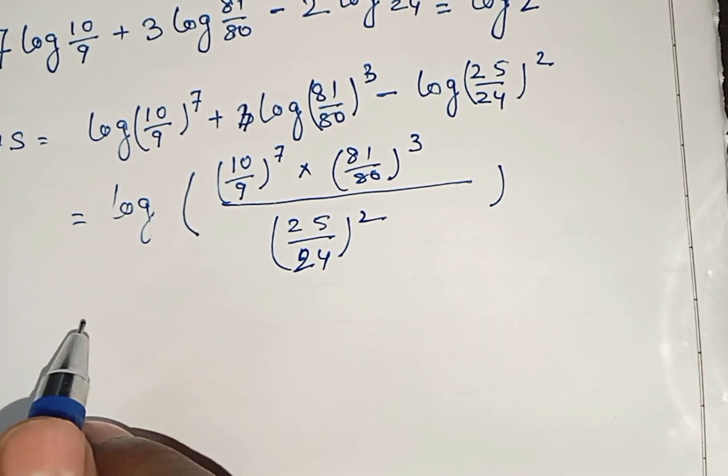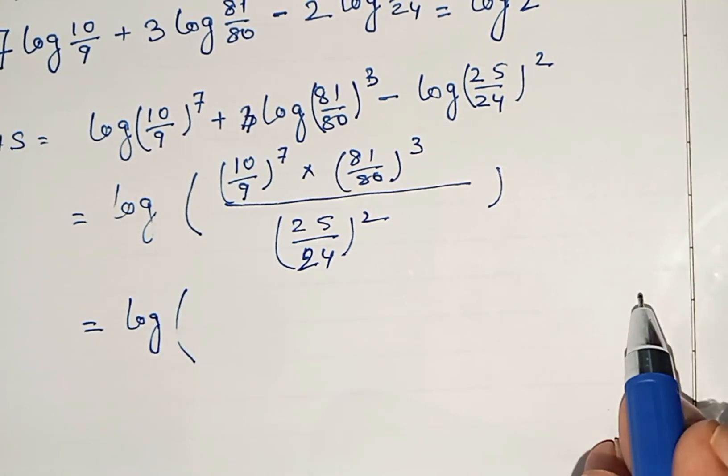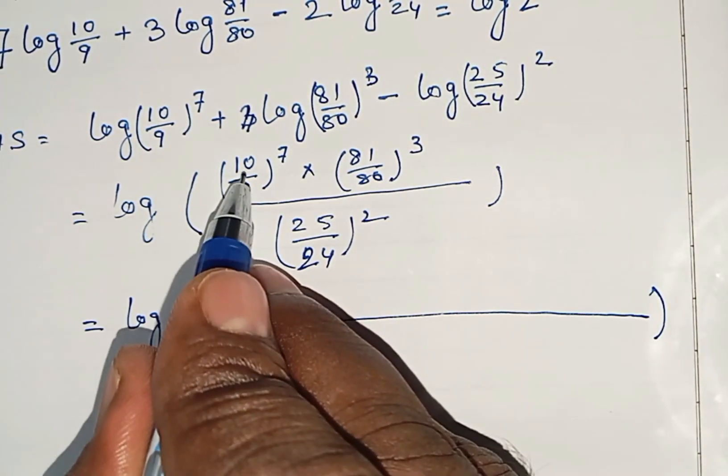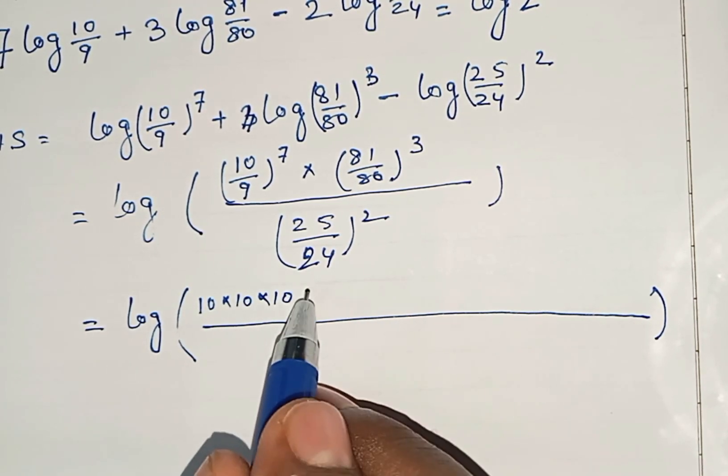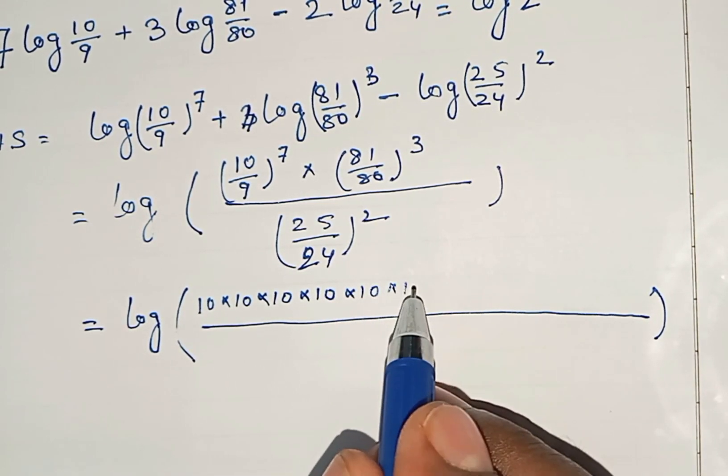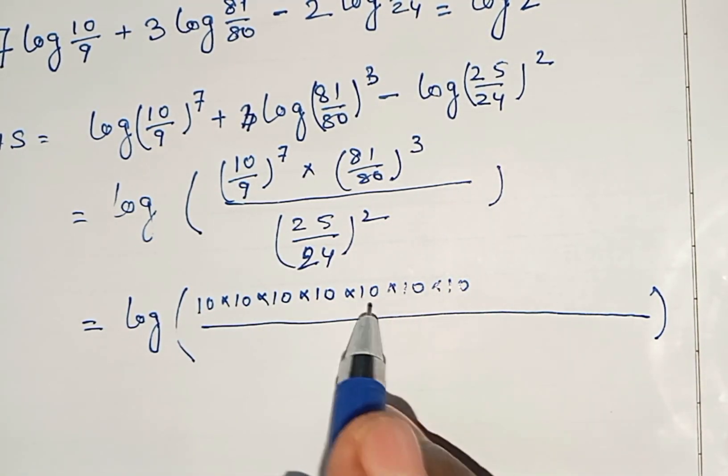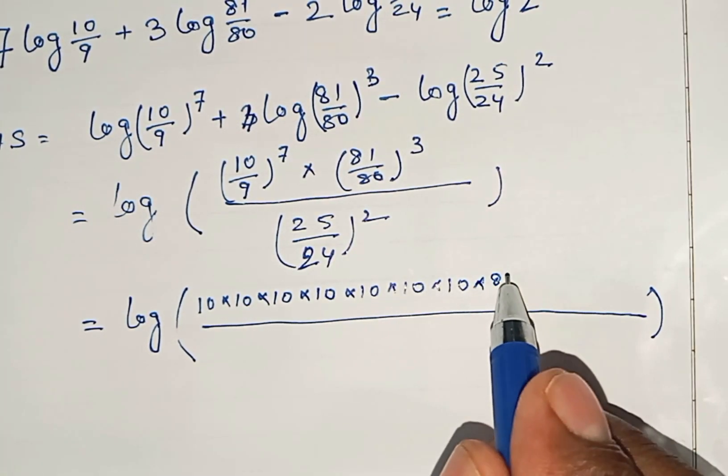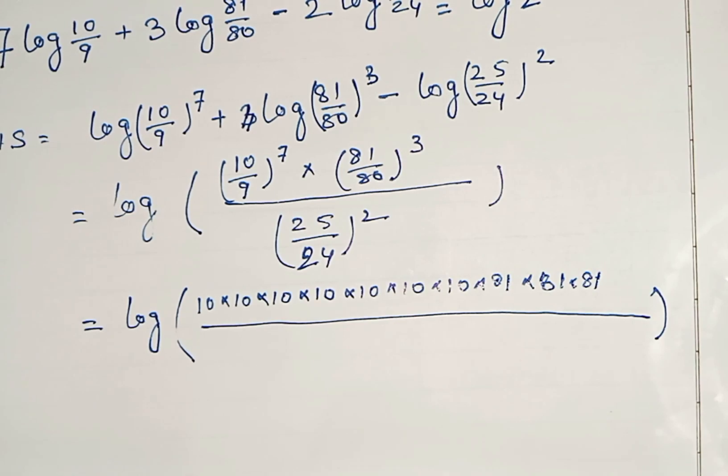Now from this equation we can write log of, we put all the values. At the numerator it will be 10, 10, 10, 10, 10, 10, 10, seven times 10 we have to write. Then 81 three times: 81, 81, 81.